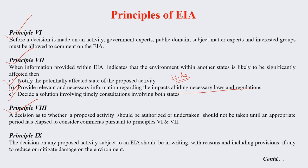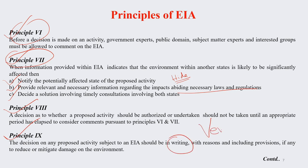Number 8: a decision on whether a proposed project activity should be authorized must not be taken until an appropriate period has passed to consider the comments pursuant to principles 6 and 7. You must not hurry — give a significant amount of time to the people and neighboring states to study the EIA report and give comments, then take a decision. Number 9: the decision on any proposed activity subject to EIA should be in writing — no verbal communication, as that does not have any record.